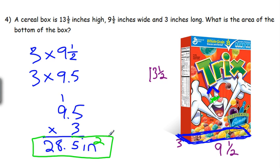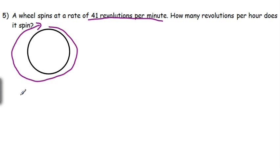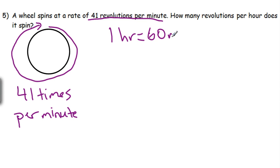Number five: A wheel spins at a rate of 41 revolutions per minute. How many revolutions per hour does it spin? We have a wheel, and revolution means it goes all the way around. If it spins 41 times per minute, so every minute this spins 41 times, how many times would it spin in an hour? Let's consider how many minutes in an hour. One hour is 60 minutes.